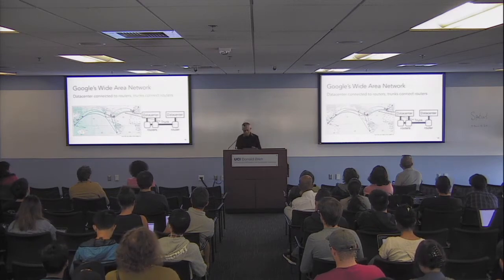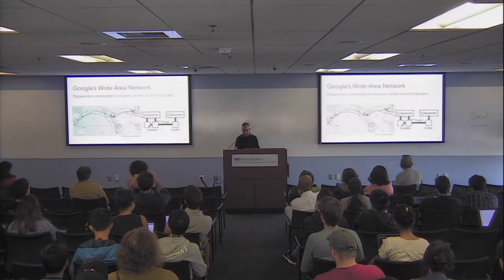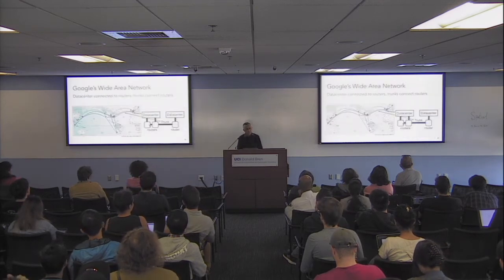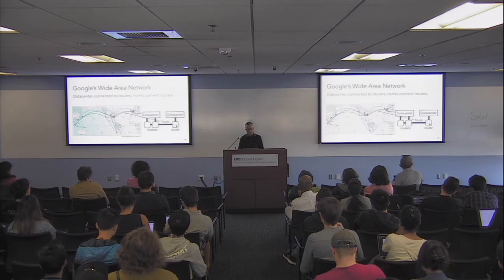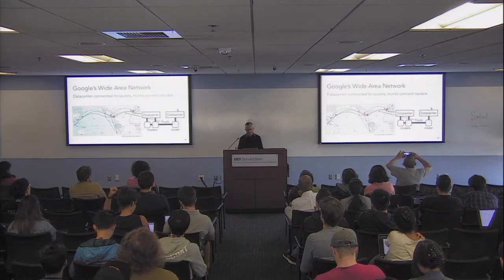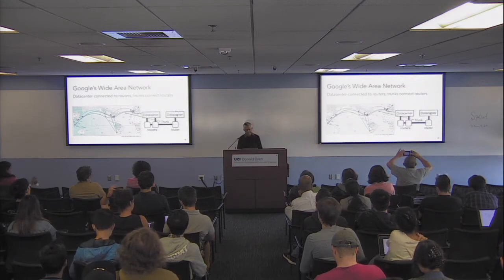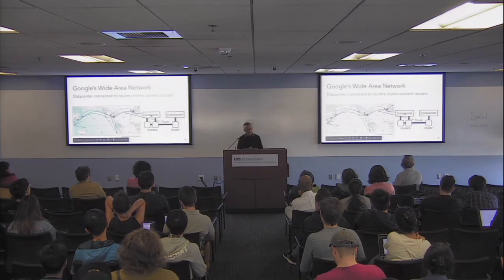Now I'll dive a little deeper and tell you what one of these routers looks like. At these sites you have routers connected by trunks to other routers, and they talk to data centers. If you have a Gmail service, for example, it runs inside a data center, comes out through the router and goes to the user. Services might run across multiple data centers and this is how they communicate.